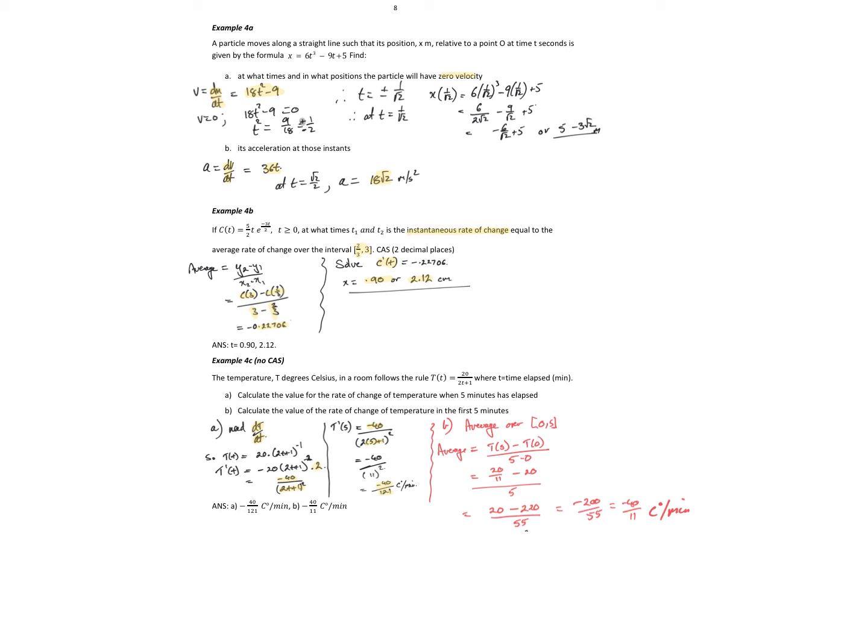So if we want the average over the first 5 minutes, there's my average rate of change. So t of 5 minus t of 0 over 5 minus 0. t of 5 is 20 on 11 minus t of 0, which is 20. All that is over 5, of course. Just get a common denominator there. So we'll have 20 minus 220 over 55, which is negative 200 on 55, which gives me that negative 40 on 11 degrees Celsius per minute.